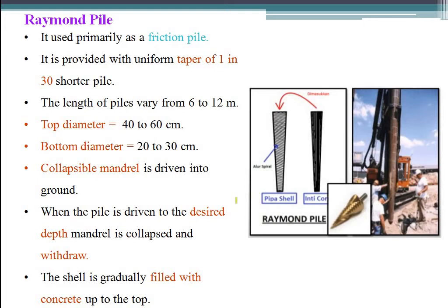Raymond Piles are used primarily as friction piles, provided with a uniform taper of 1 in 30. The length of piles varies from 6 to 12 m; top diameter is 40 to 60 cm and bottom diameter is 20 to 30 cm. A collapsible mandrel is driven into the ground. When the pile reaches the desired depth, the mandrel is collapsed and withdrawn.